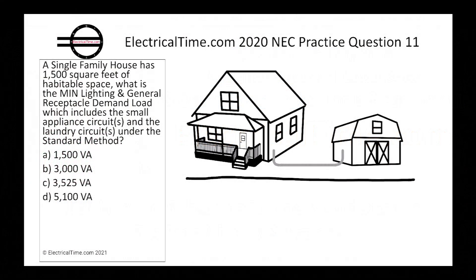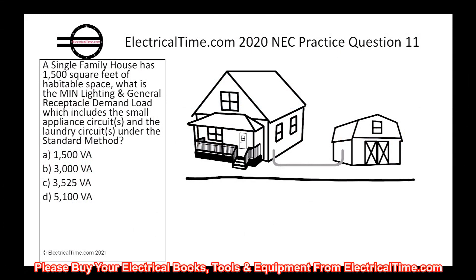Okay, here we go. A single family house has 1,500 square feet of habitable space. What is the minimum lighting and general receptacle demand load, which includes the small appliance circuit or circuits, and the laundry circuit or circuits under the standard method?